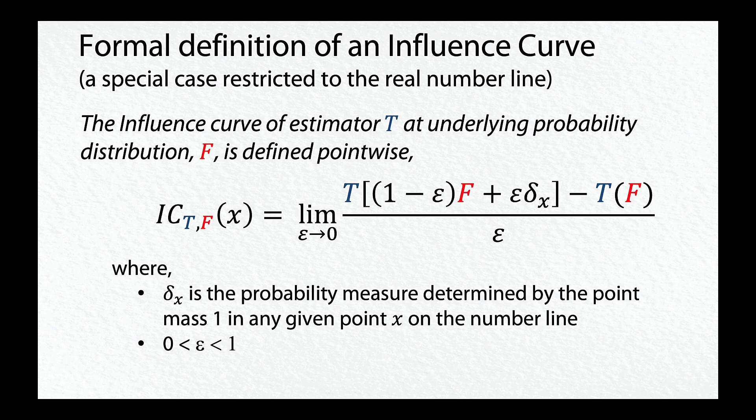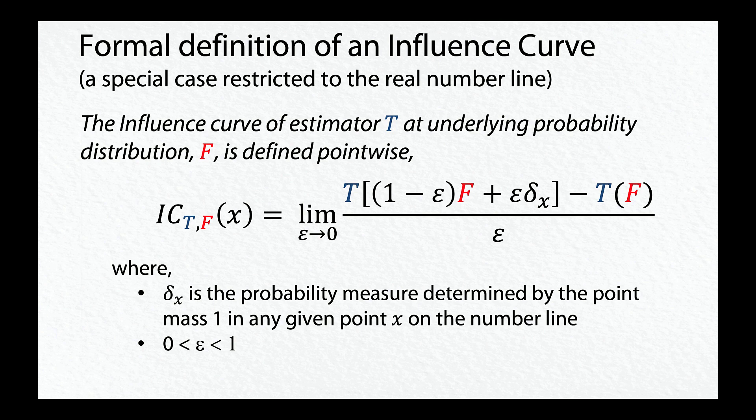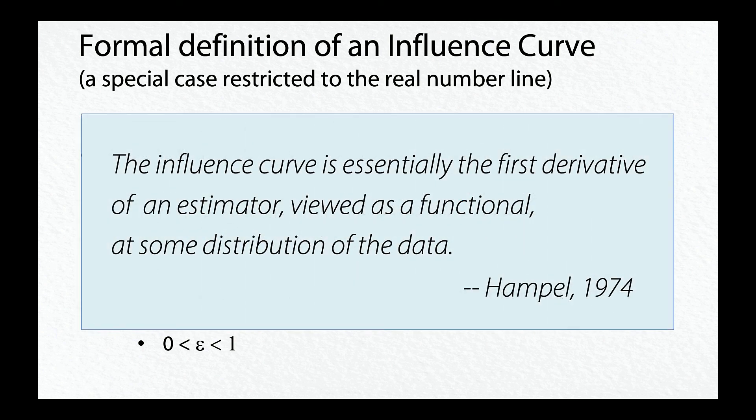This form might look familiar. Recall from introductory calculus that the limit as delta x goes to 0 of delta y over delta x is a derivative that describes an instantaneous rate of change. In fact, Hample wrote that the influence curve is essentially the first derivative of an estimator viewed as a functional at some distribution of the data.